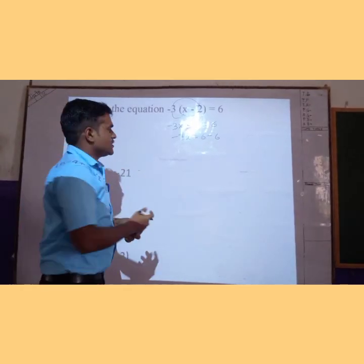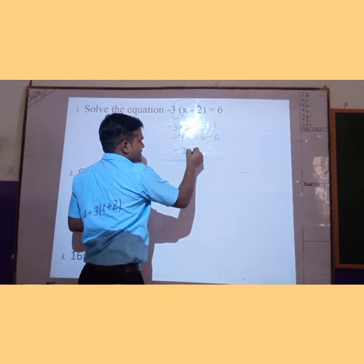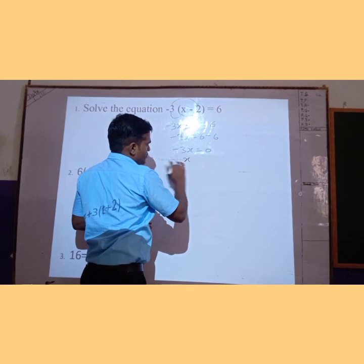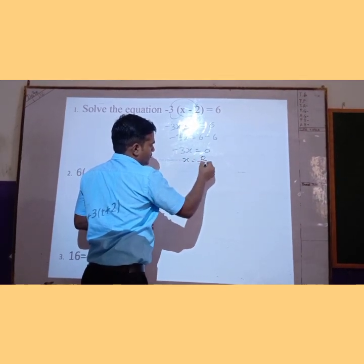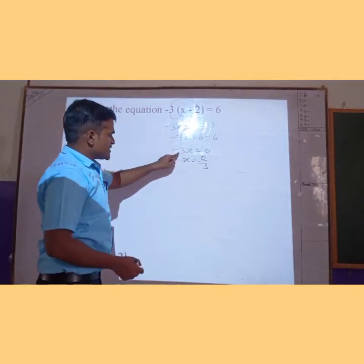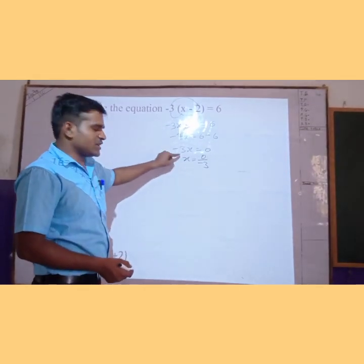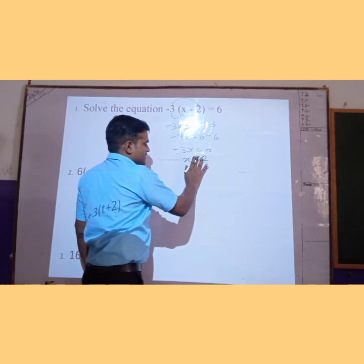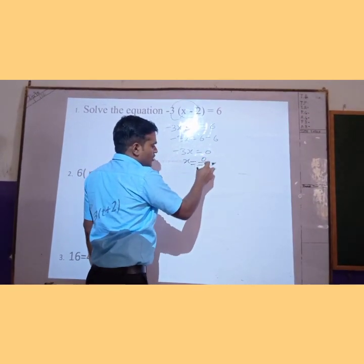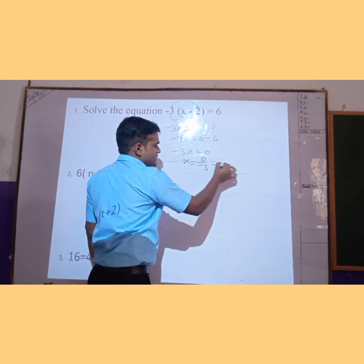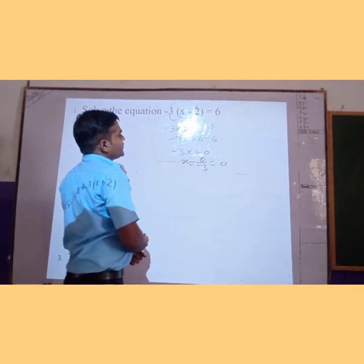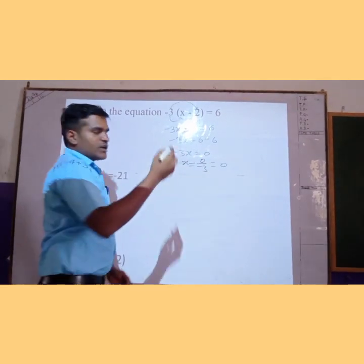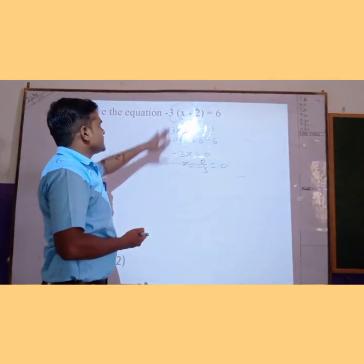By the transposition law, the sign of terms changes. So x is equal to 0 upon minus 3. We transpose minus 3 from left to right — since it is multiplied, it will be divided after transposing. So 0 upon minus 3 is 0. Therefore, the value of x is 0, and x equals 0 is the only value which satisfies this equation.